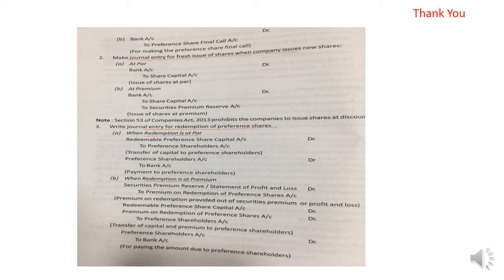Then we have the redemption entry — redemption at par or redemption at premium. When we redeem, we will close the Preference Share Capital account. The entry is: Redeemable Preference Share Capital Account debit to Preference Shareholders Account. This records the amount that is due to the preference shareholders.